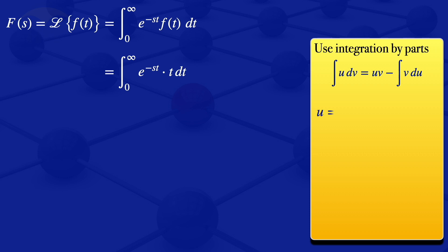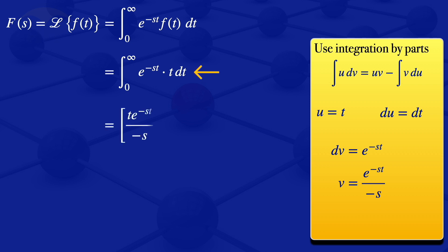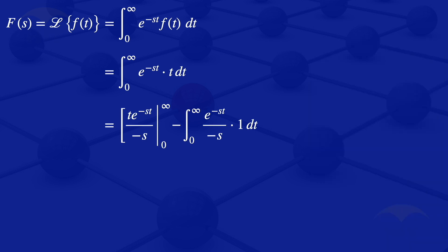We choose u = t, and differentiating with respect to t we get 1, so du = dt. For dv we choose e^(-st), and integrating dv with respect to t we obtain v = e^(-st) / (-s). Substituting into the integration by parts formula we have: t · e^(-st) / (-s) evaluated from 0 to infinity, minus the integral from 0 to infinity of e^(-st) / (-s) times 1 dt.